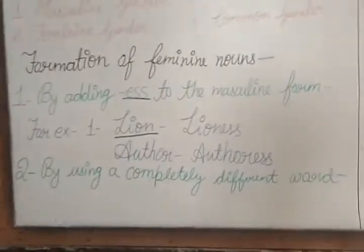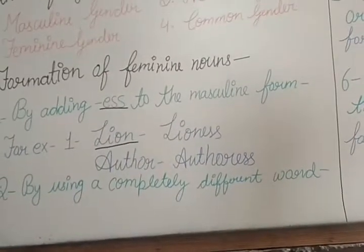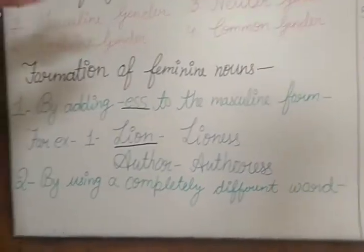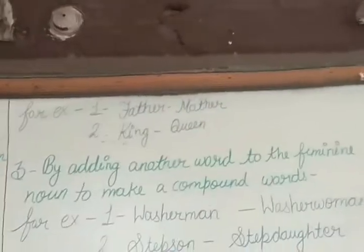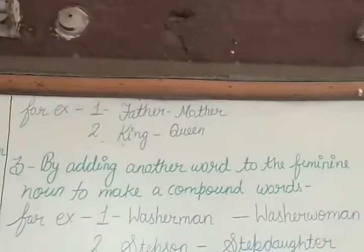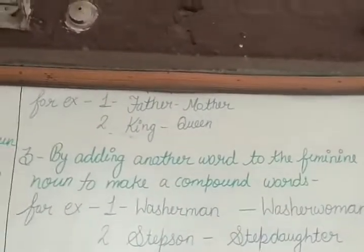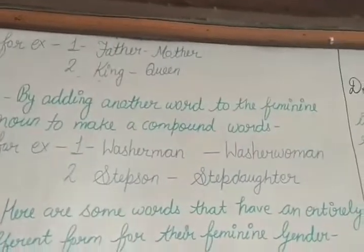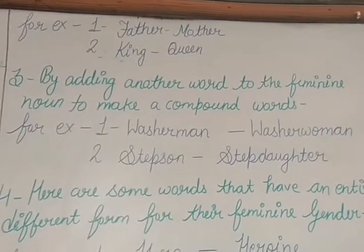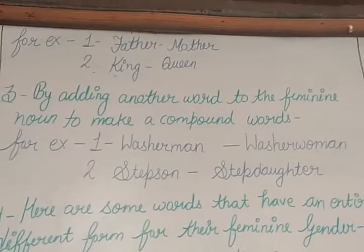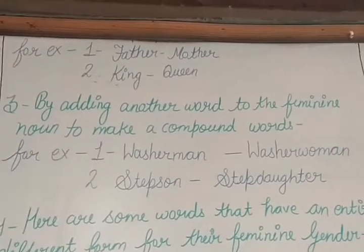Feminine genders are also formed by using a completely different word, like father–mother, brother–sister, king–queen. Feminine genders are also formed by adding another word to the noun to make it a compound word.